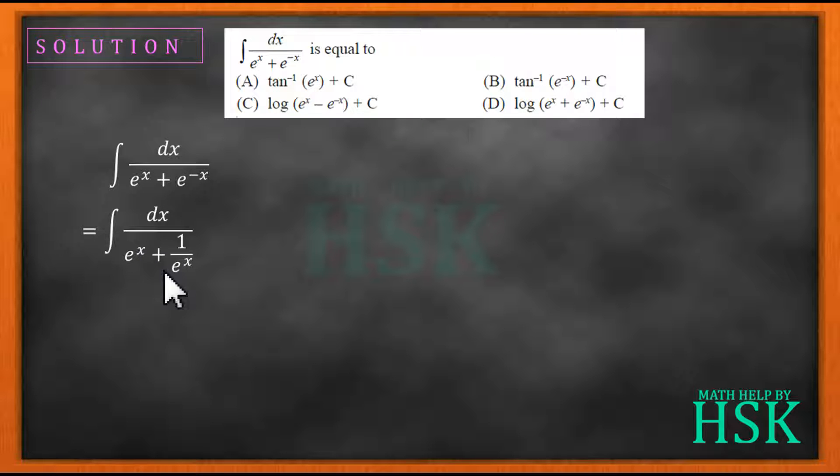This e to the power of x, which is in the denominator, goes up and multiplies here to give me e to the power of x upon e to the power of 2x plus 1 dx. Now next, what I'm going to do, I'm going to substitute e to the power of x as equal to t.